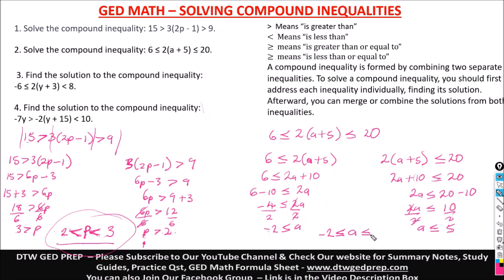So to combine, we put a in the middle and start with the lower number, which is negative 2. This expression means a is greater than or equal to negative 2. And this means a is less than or equal to 5. It's all about interpretation to combine — how each number relates to a. That is how you put the two inequalities together, just like we did for p in example 1.